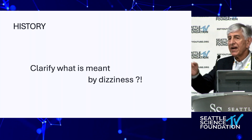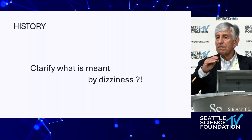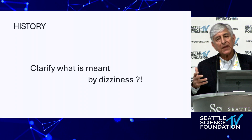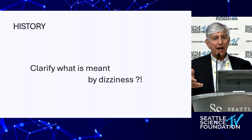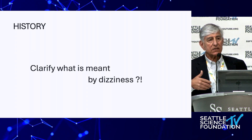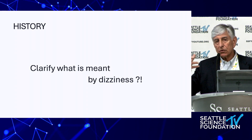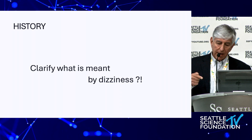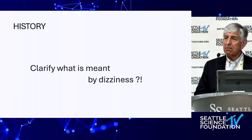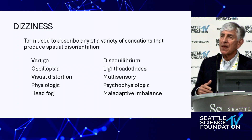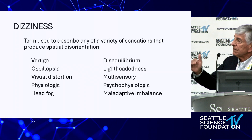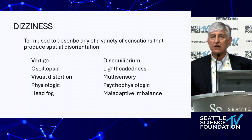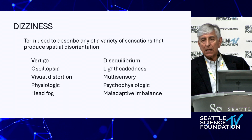Clarifying what is meant by dizziness is not always easy because patients come in and forget they're at an ENT office — they want to talk about their headaches, menstrual cramps, everything bothering them — instead of defining what they mean by the term dizziness. We try to identify different kinds of dizzy symptoms. Vertigo is an illusion of motion, but it doesn't always mean spinning.